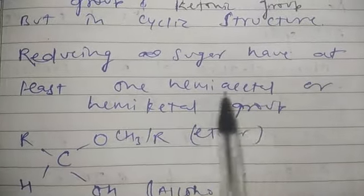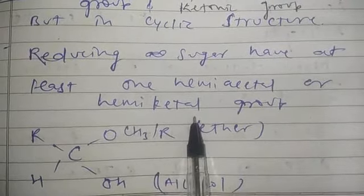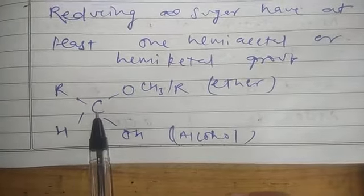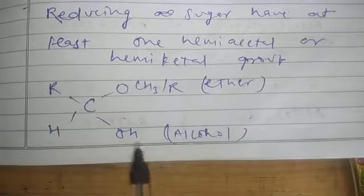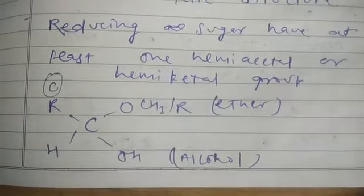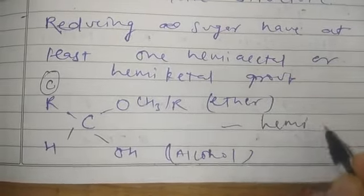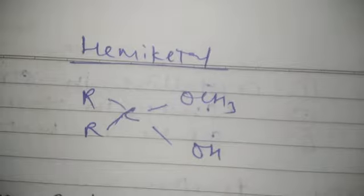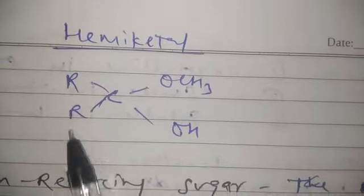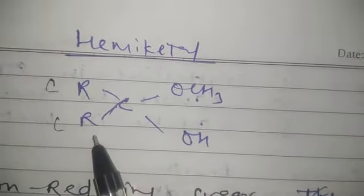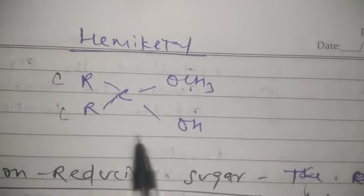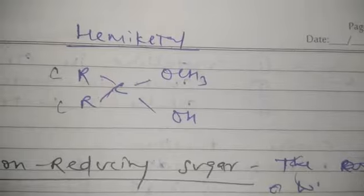Hemiacetal condition: the carbon has one ether group (–OR), one OH group, one hydrogen, and one alkyl/carbon group. Hemiketal condition: the carbon has one OH group and two alkyl groups (two carbon groups attached) instead of one hydrogen. The difference is that hemiacetal has one R and one H, while hemiketal has two R groups. If either of these conditions is present, the sugar is a reducing sugar. If not, it is a non-reducing sugar.